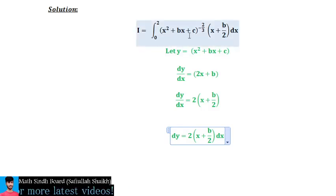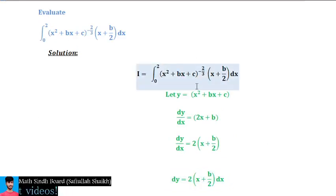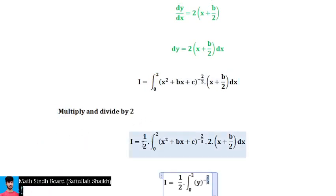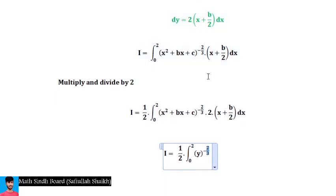Looking at the original integrand, we have (x² + bx + c)^(-2/3)·(x + b/2)·dx. We can see (x + b/2)·dx appears in dy. To match it, we multiply and divide by 2 inside the integral.